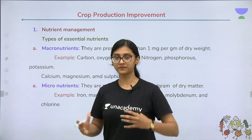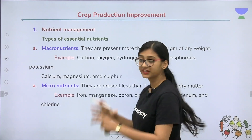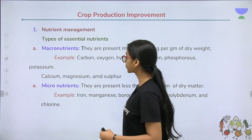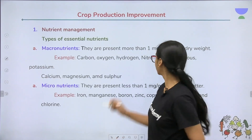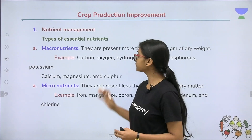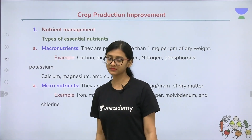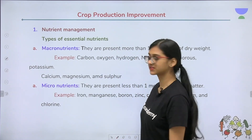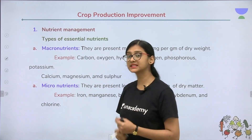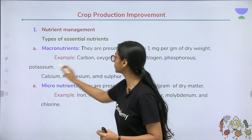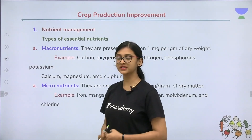Macronutrients — the name itself says 'macro', meaning large amount. They are present at more than one milligram per gram of dry weight and need to be introduced into crops in higher amounts. Examples of macronutrients include carbon, oxygen, hydrogen, nitrogen, phosphorus, potassium, calcium, magnesium, and sulfur. Carbon, oxygen, and hydrogen are non-mineral nutrients, whereas nitrogen, phosphorus, potassium, calcium, magnesium, and sulfur are mineral nutrients.